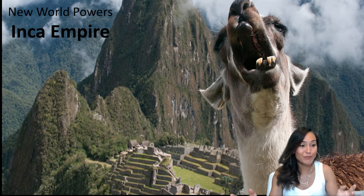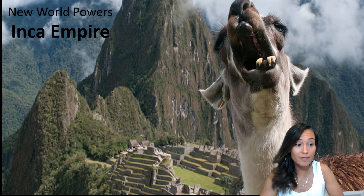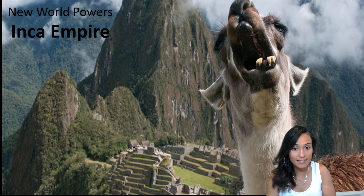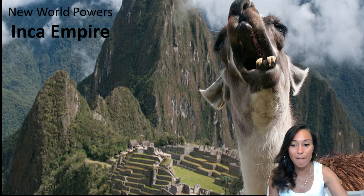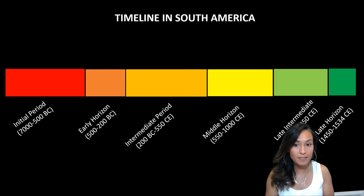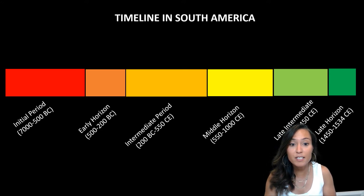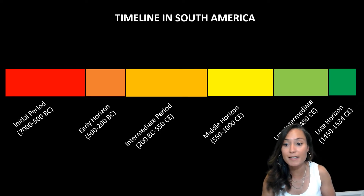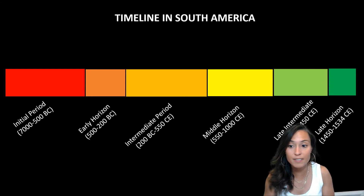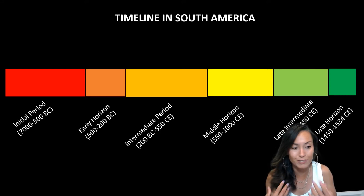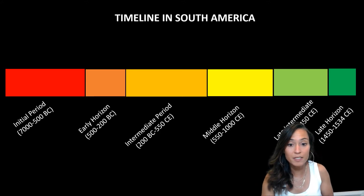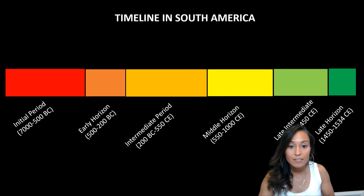Hi everyone and welcome to lecture 5.2 where we will explore the development of complex societies in the Andes, particularly focusing on the rise of the Inca Empire. Archaeologists have typically divided Peruvian and Andean history into a series of developmental periods beginning with the initial period, which saw the development of ceramics and agricultural production. Settlements became larger, more hierarchical, and developed more sophisticated architecture and material culture. This developmental sequence concludes in the Late Horizon, dating from roughly 1450 to 1550 AD, during which we see the emergence and fluorescence of the Incan Empire.